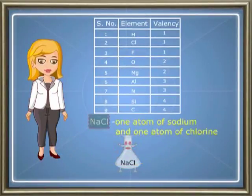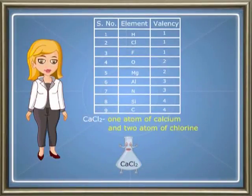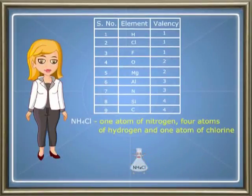NaCl, that is sodium chloride, contains one atom of sodium and one atom of chlorine. CaCl2, that is calcium chloride, contains one atom of calcium and two atoms of chlorine. NH4Cl, that is ammonium chloride, contains one atom of nitrogen, four atoms of hydrogen, and one atom of chlorine.